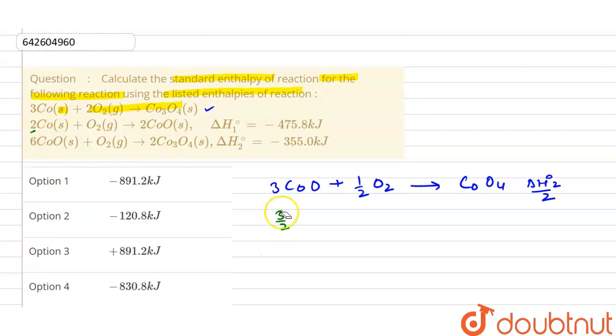In this first reaction we are multiplying by three by two, so this will be three times of cobalt solid plus three by two times of oxygen, and that will convert to three times of cobalt oxide. Now add this to the second reaction.